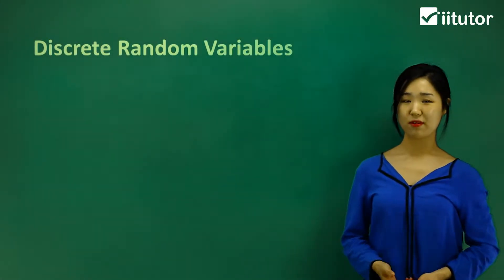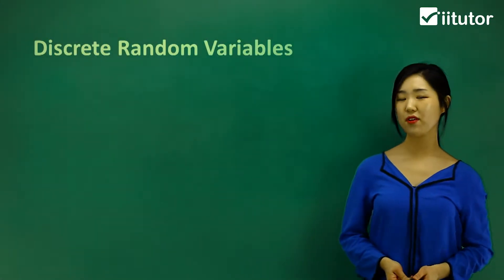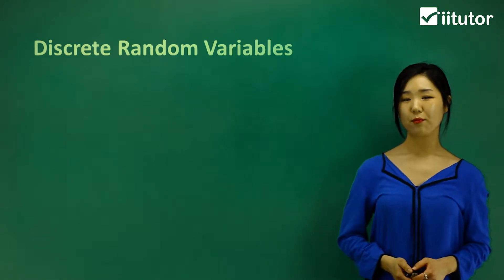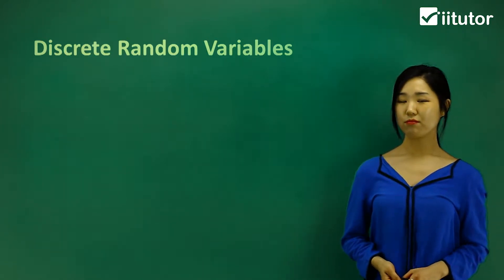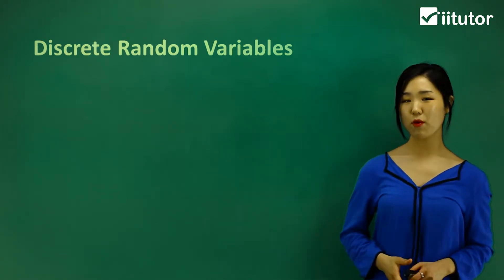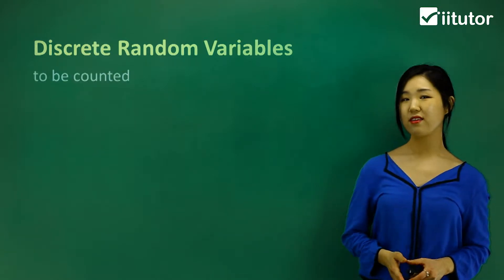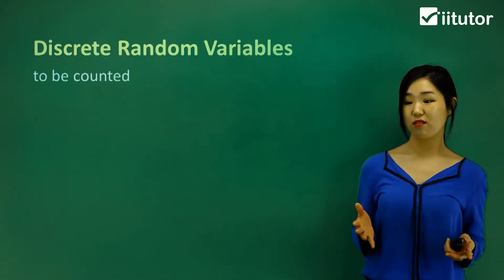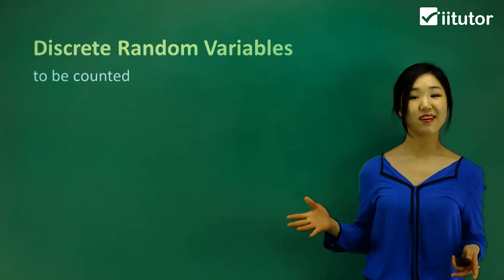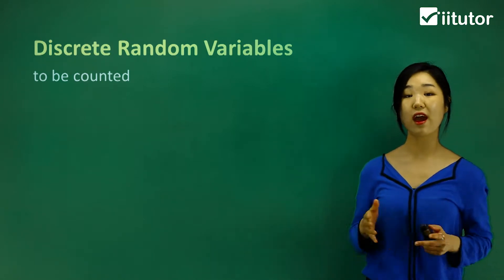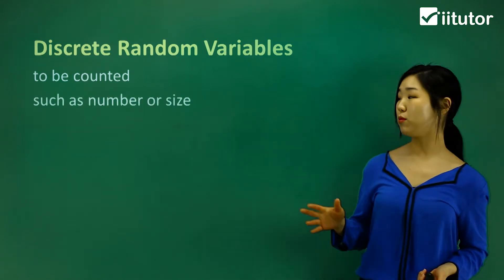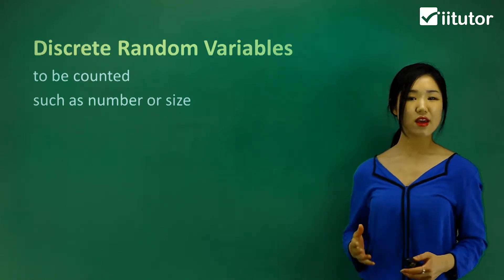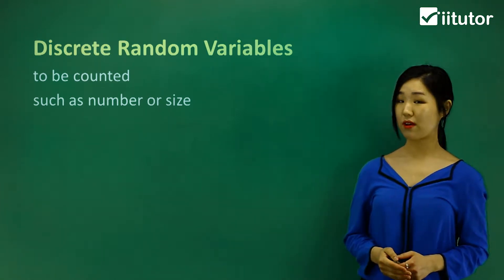Let's look at different types of data. The first one we're going to be talking about is discrete random variables. The most important thing about the discrete ones is that they should be counted — easily counted and categorized. It could be any number or size of something. These are called discrete random variables.